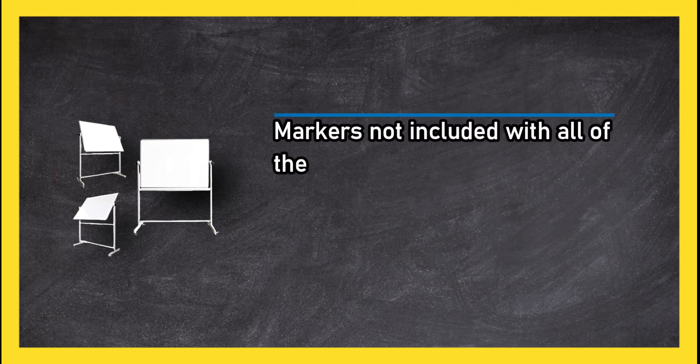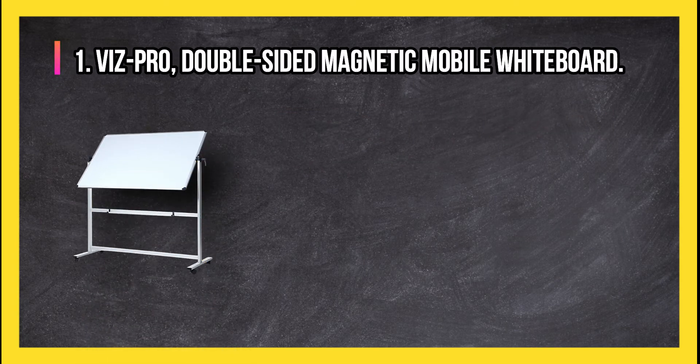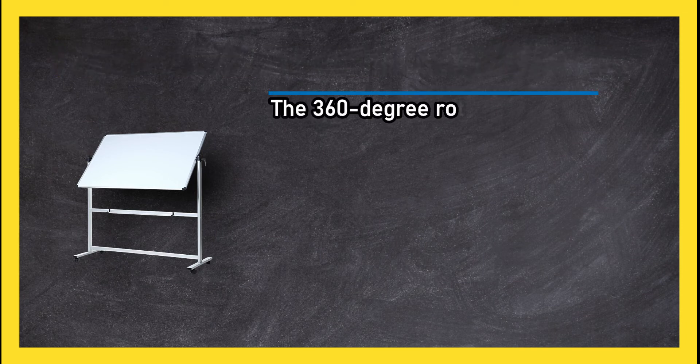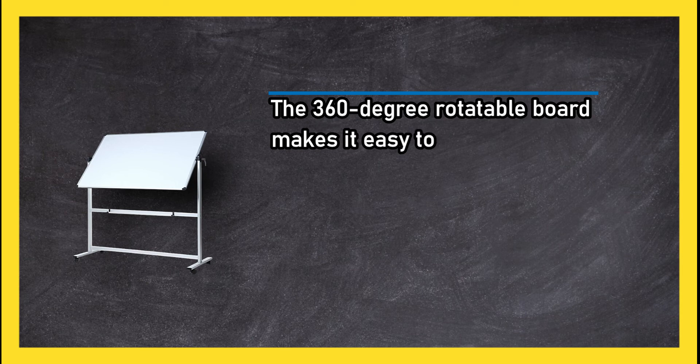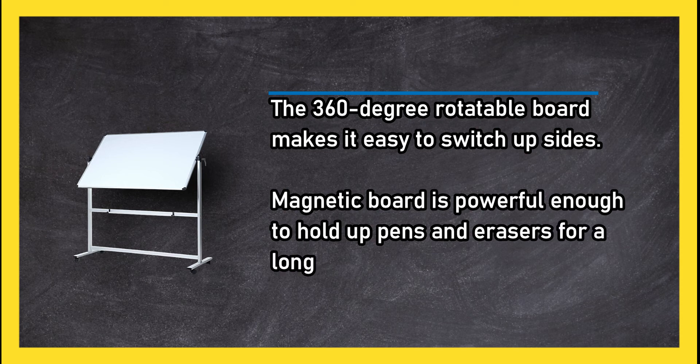At number 1: Vist Pro double-sided magnetic mobile whiteboard. The 360-degree rotatable board makes it easy to switch up sides. Magnetic board is powerful enough to hold up pens and erasers for a long time. Requires simple assembly.